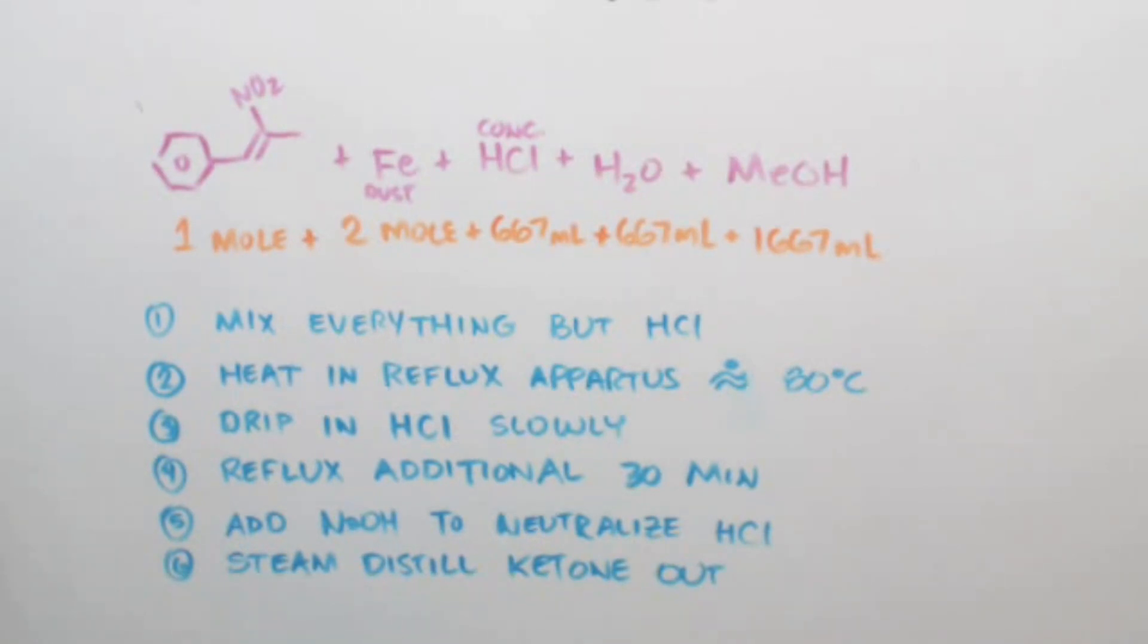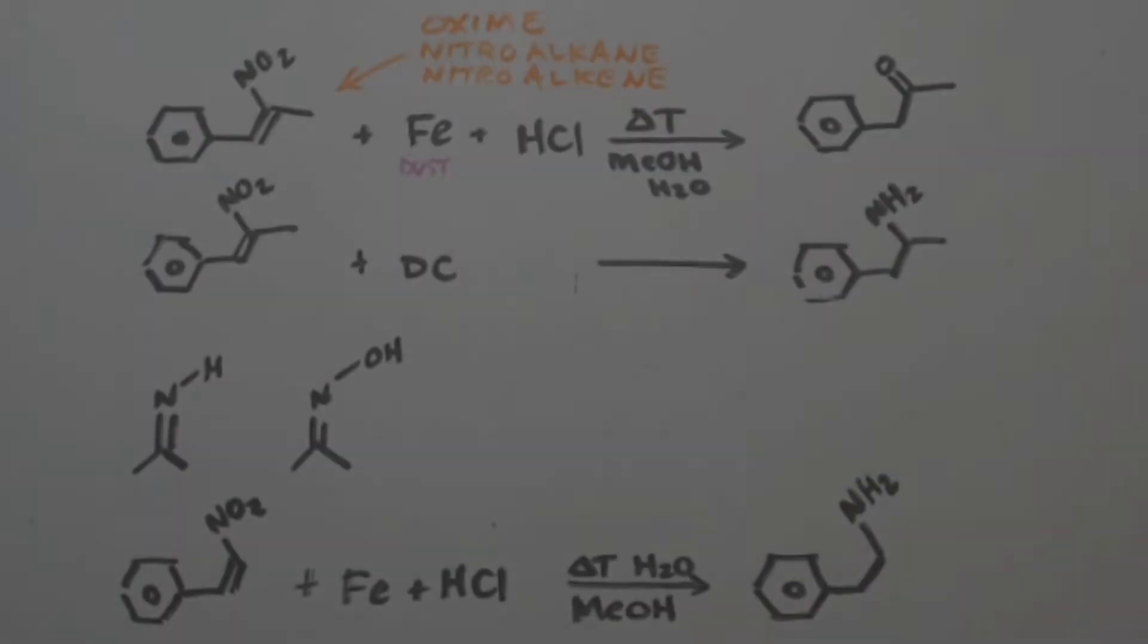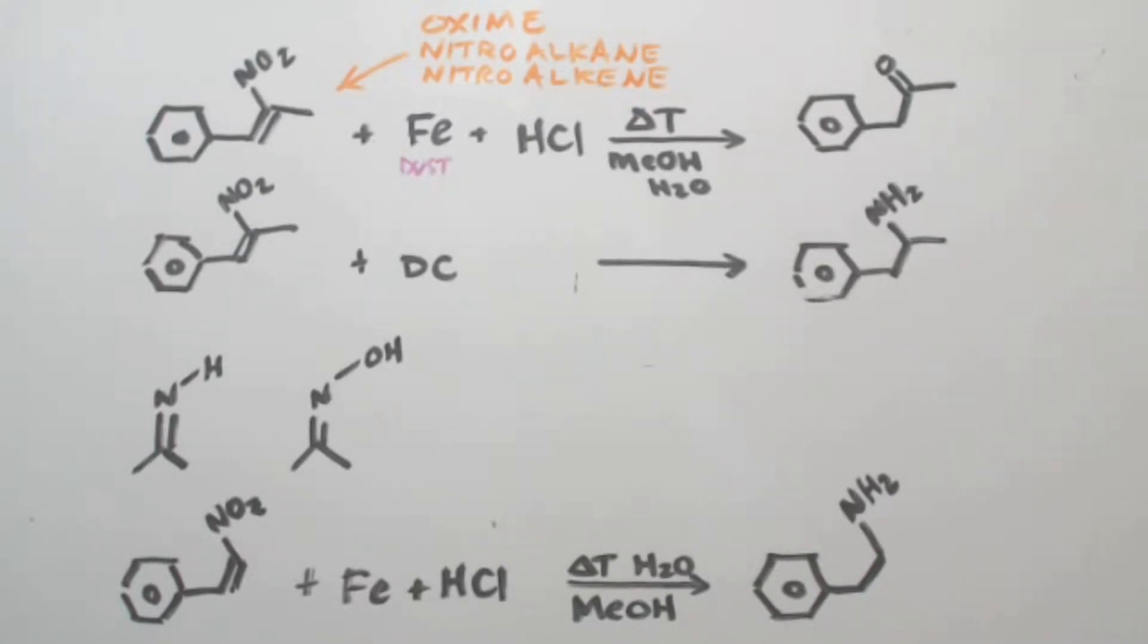Now, after you add all that in, you're going to reflux it like a hard reflux for 30 minutes, an additional 30 minutes. After that, you're done. You did it. You made it. Add some sodium hydroxide to neutralize the HCl. Maybe this is why people add less HCl, because you're going to be making a lot of sodium chloride, which means you're going to have to add a lot of sodium hydroxide. And you'll have a lot of salt in solution at that point.